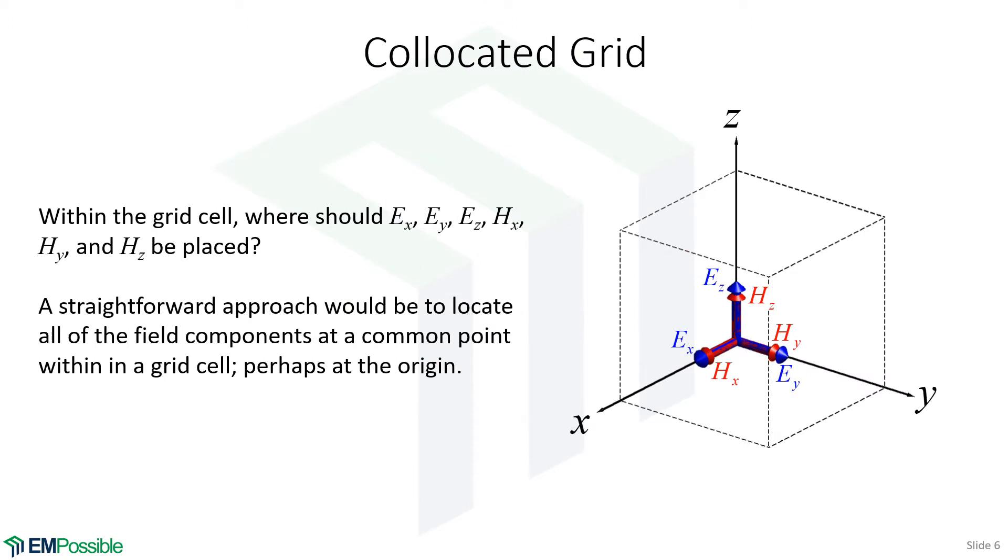We have six field components to arrange within each cell: an x, y, and z component for the electric field, and an x, y, and z component for the magnetic field. The most obvious thing to do would be to locate all the field components at a common point within each cell. Here, I'm drawing it at the origin, but we could put that at the center or any of the other corners.